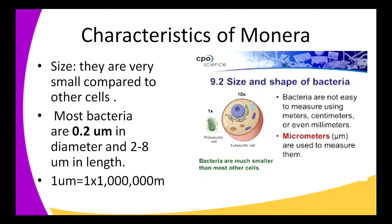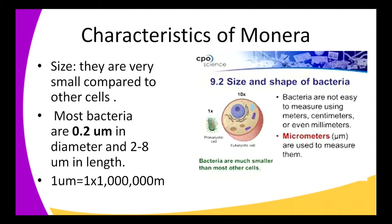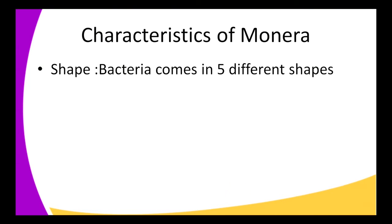Another characteristic of Monera is their size — they are very small compared to other cells. Most bacteria are 0.2 micrometers in diameter and 2 to 8 micrometers in length. Bacteria are not easy to measure using meters, centimeters, or even millimeters, so we use micrometers. They are the tiniest organisms that can ever be found in a habitat or environment.